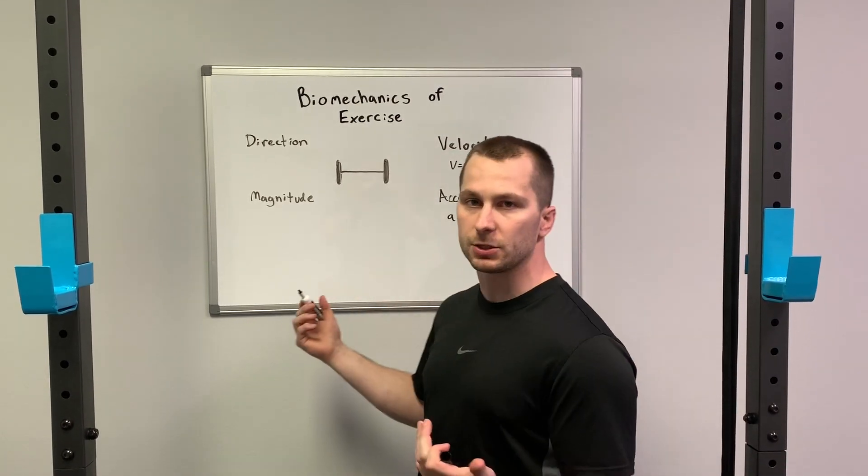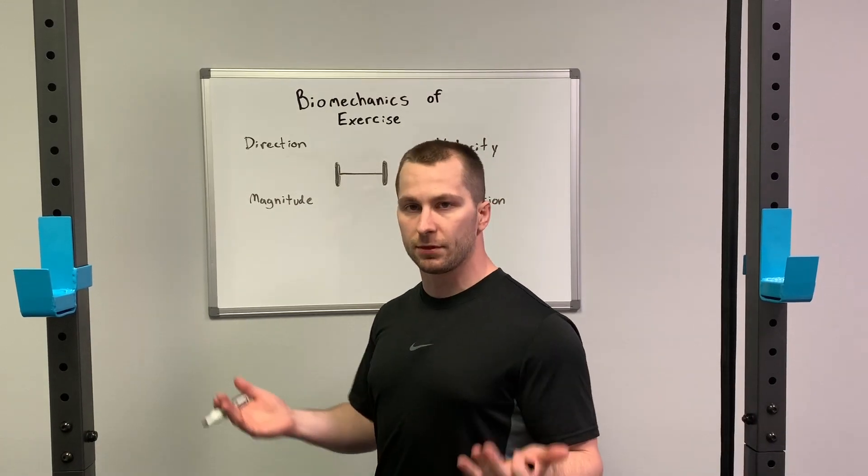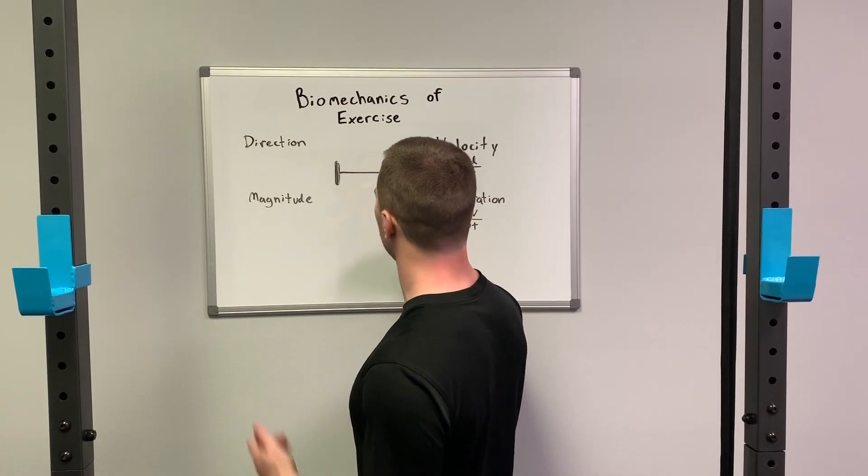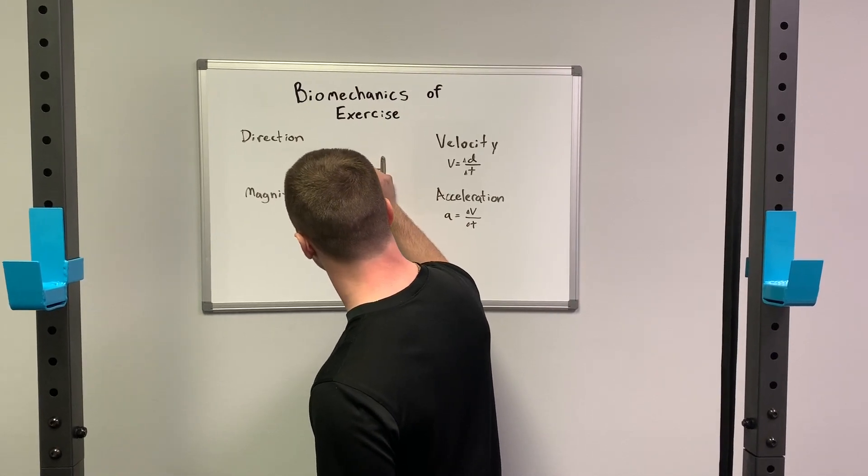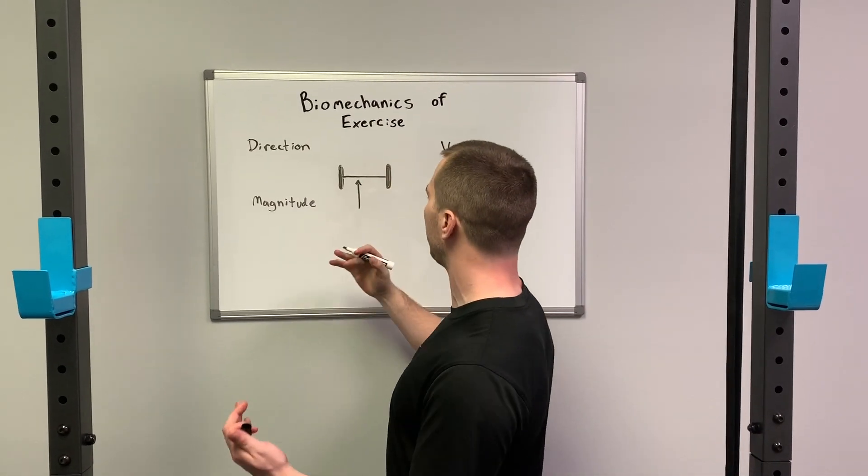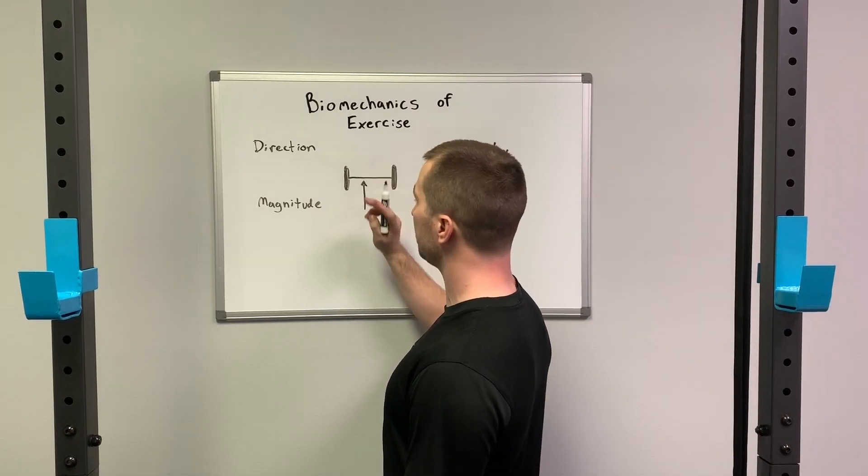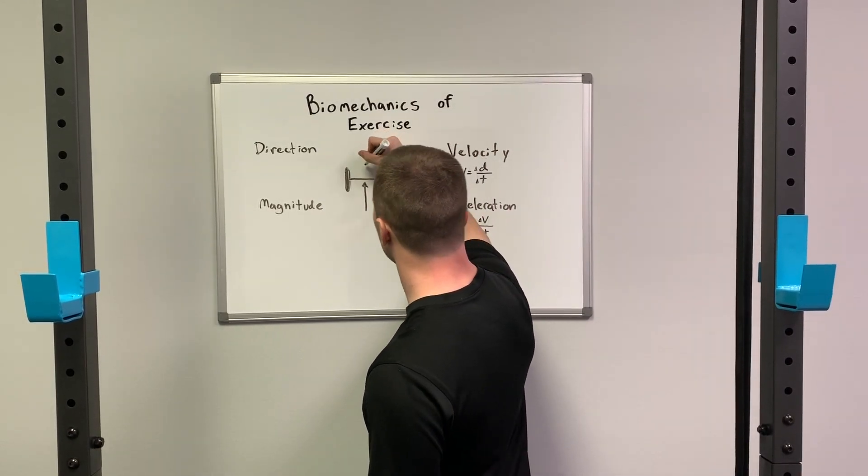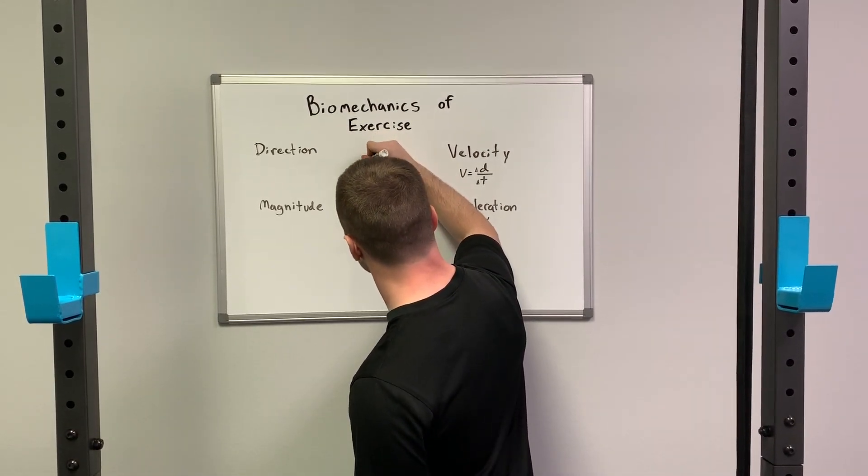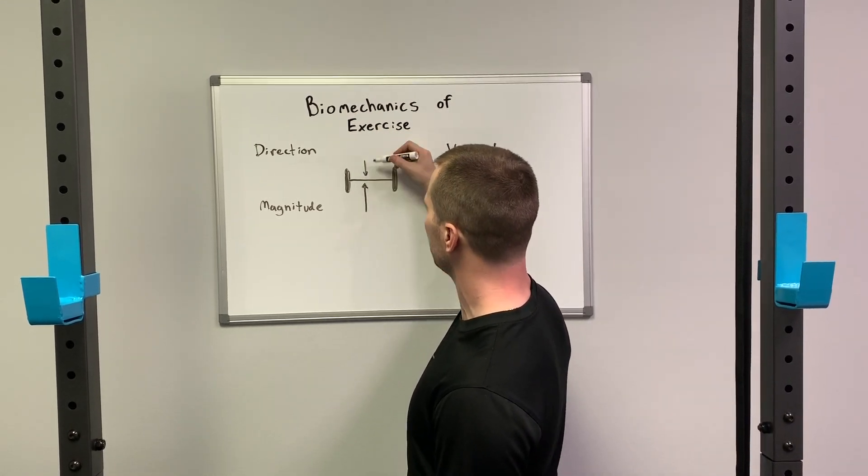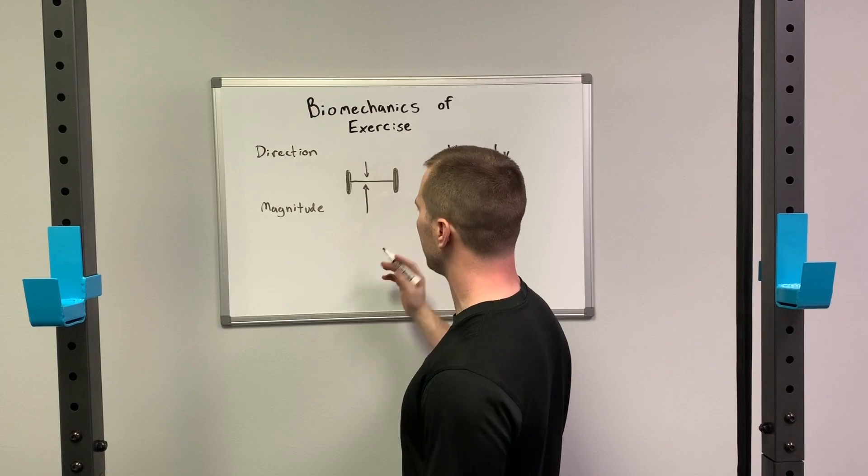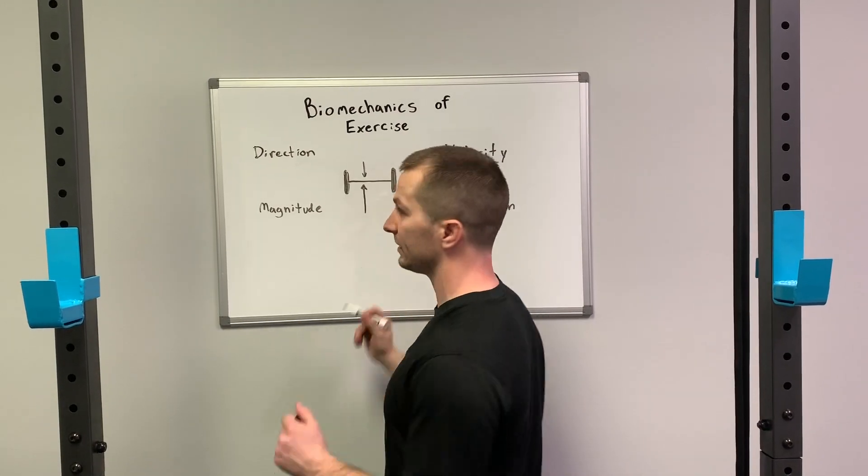A good example to describe it would be, say I'm doing a bench press. As I lift the bar up off my chest and raise it up, the force vector of me lifting the bar up, the vector that I'm applying to it in the up direction, is greater than the vector force vector of gravity pushing down on it. Big vector, small vector moving in different directions. That says I'm raising it up.